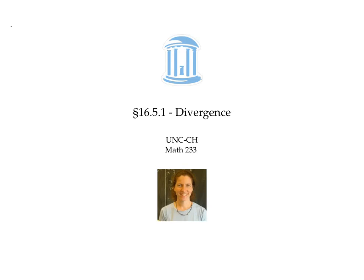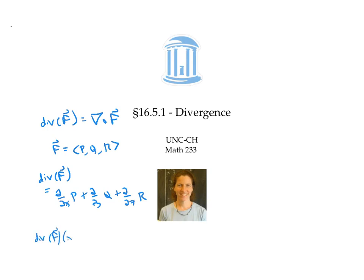In this video, we defined the divergence of a vector field F as the gradient dotted with F. If F has components p, q, and r, this means that the divergence of F is defined as d/dx of p plus d/dy of q plus d/dz of r. We saw that intuitively, divergence of F at a point represents the net fluid flow from the point.